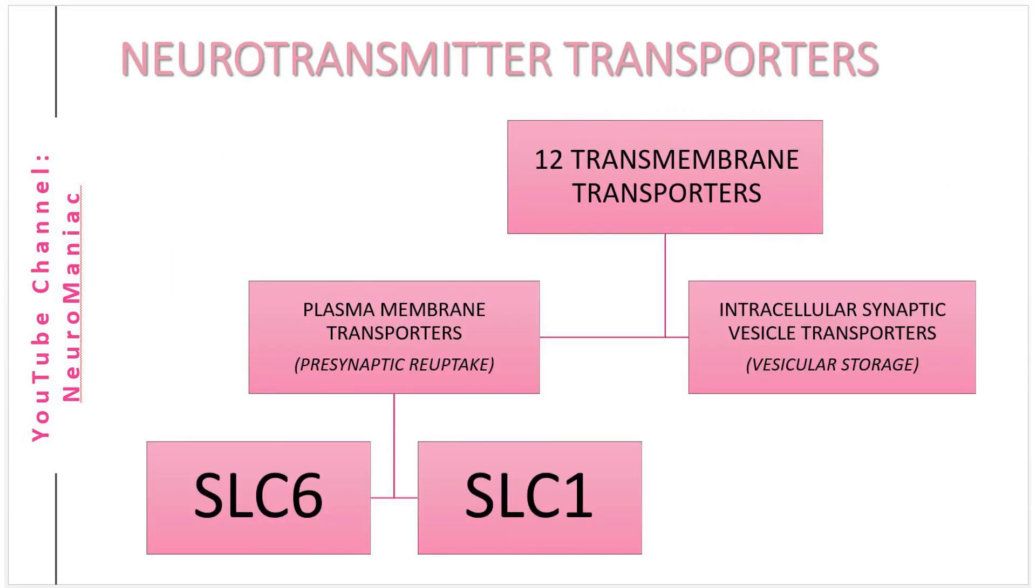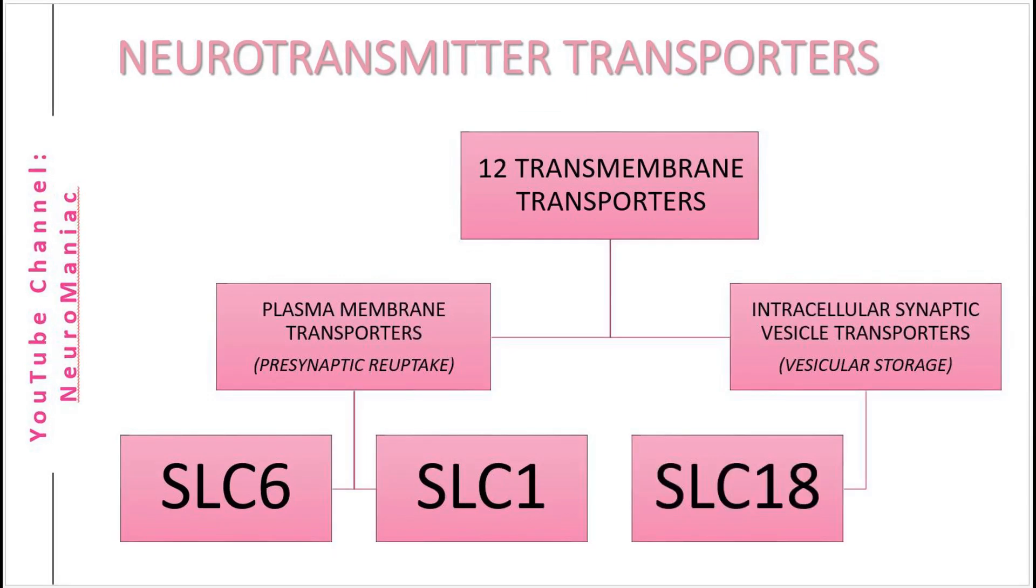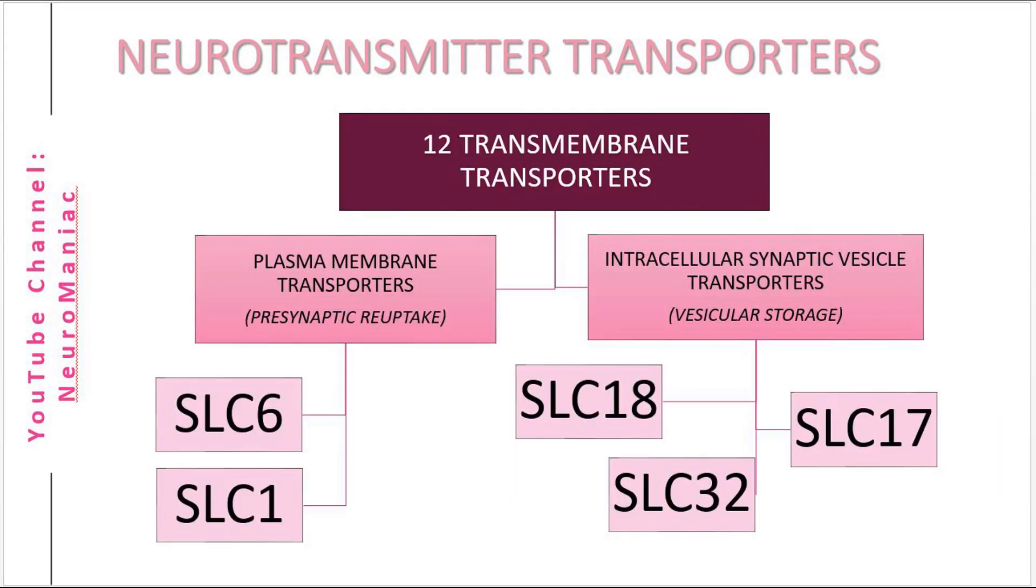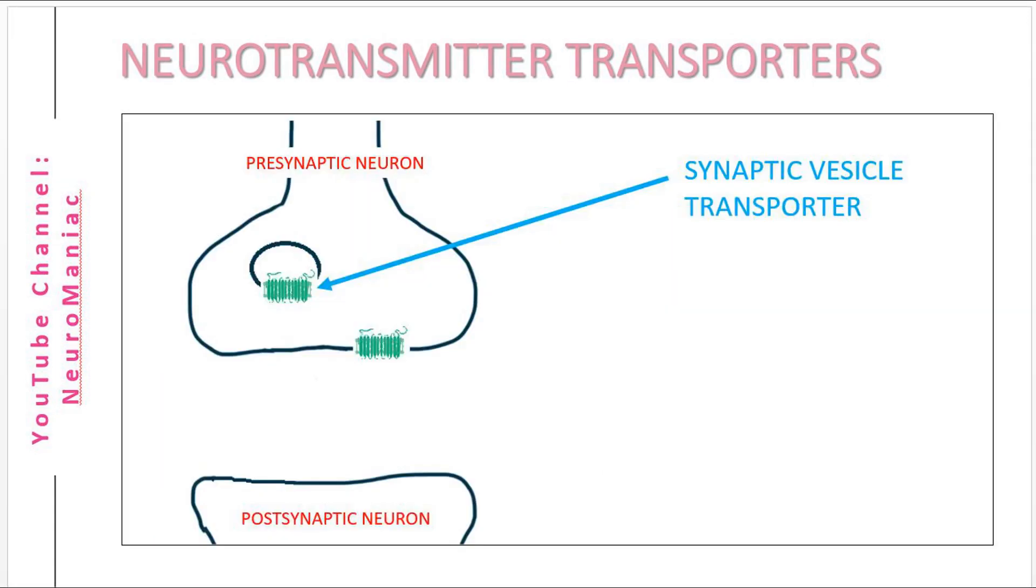Now let's head back to our chart for transporters. Transporters involved in packaging neurotransmitters from the neuronal cytoplasm into vesicles are known as intracellular synaptic vesicle transporters. I know, it's a mouthful. This contains three subclasses known as the SLC18, SLC32 and SLC17 gene families. Unlike the plasma membrane transporters, these structures are found on the membranes of vesicles.